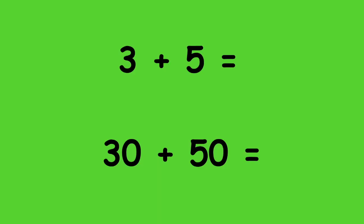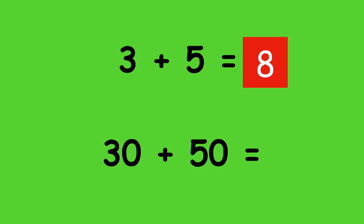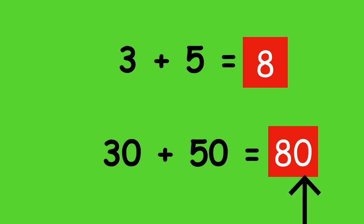If I know the sum of 3 plus 5, then all I need to do is add a 0 because I'm adding groups of 10. So if 3 plus 5 is equal to 8, that must mean that 30 plus 50 is equal to 80. And there we have our sum of 30 plus 50, which is equal to 80.